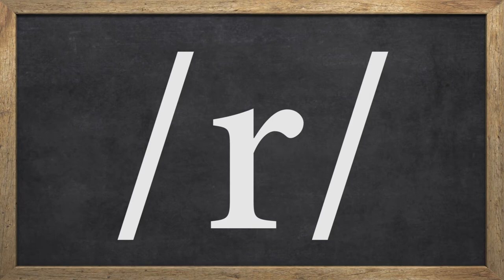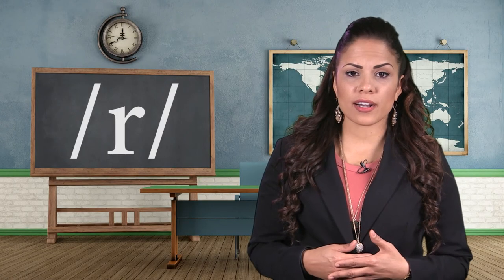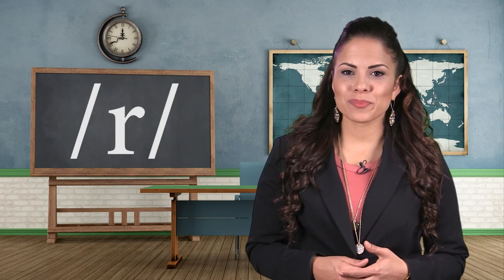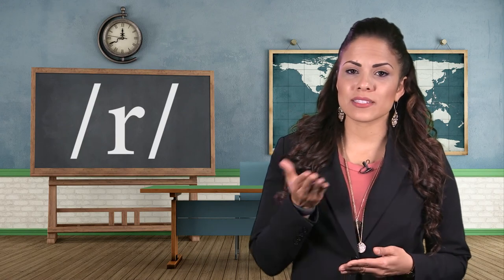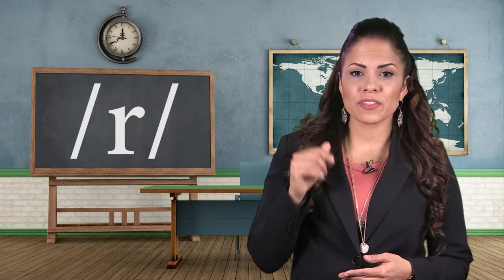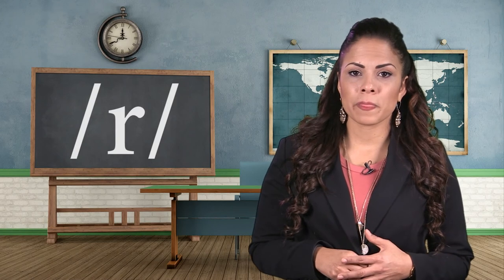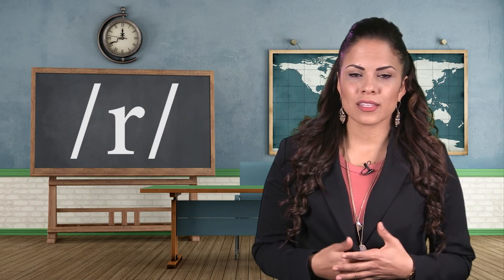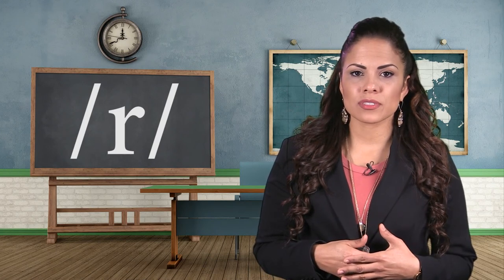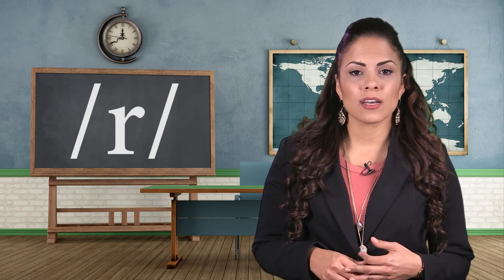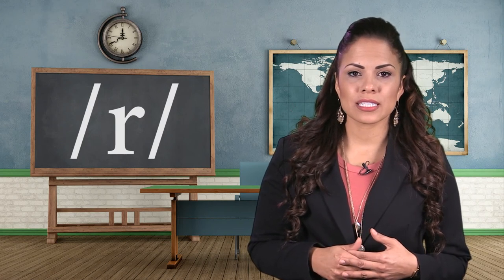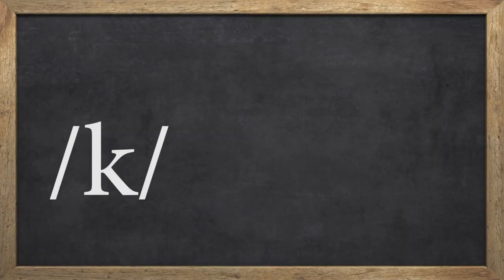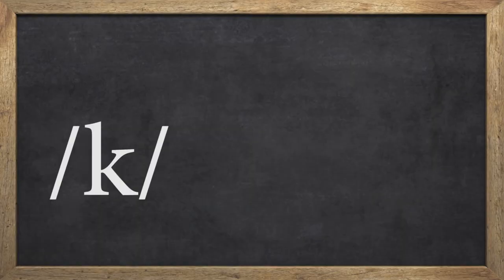Listen for /j/ in: yes, you, universe, beyond, onion, and formula. Another palatal sound is /r/. In several languages, the R is a strong sound, but in English it is not so strong. To produce /r/, your tongue will be bent, pointing towards the roof of your mouth. Your vocal folds will vibrate and you will produce a slow stream of airflow. Listen in the examples: run, write, arrive, erect, star, and pear.